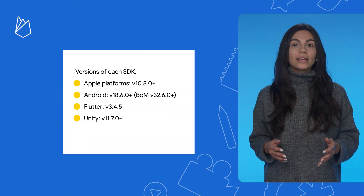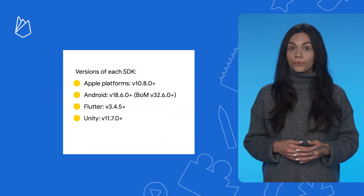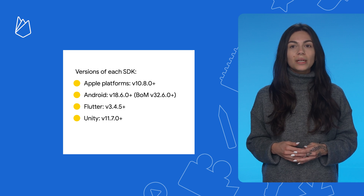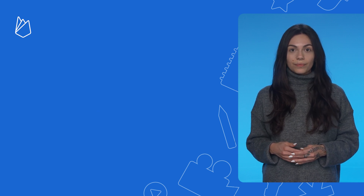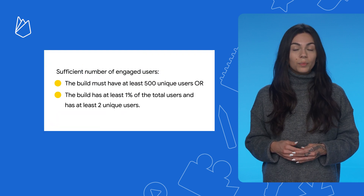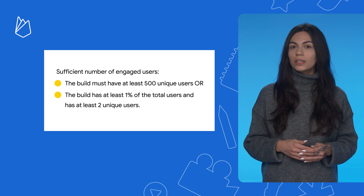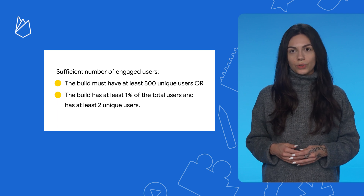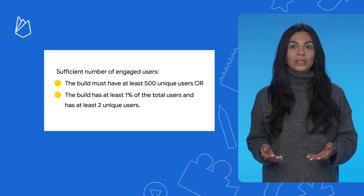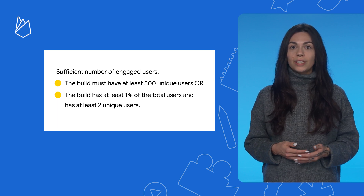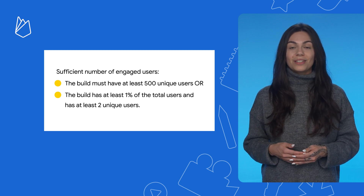You can try it with your latest release in just three steps. First, make sure your app uses at minimum these versions of the Crashlytics SDK. Second, publish a new version of the app's reproduction and have a sufficient number of engaged users. And finally, open the release monitoring dashboard, as I showed earlier, and see your new data arrive in real time.